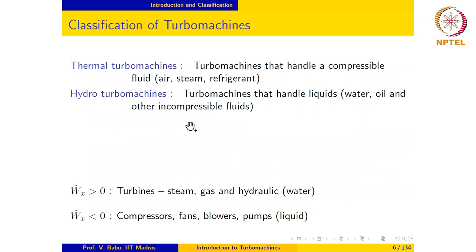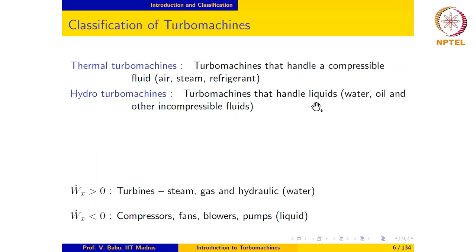Turbo machines may be classified in several different ways. The first classification is according to the type of fluid handled. If the machine handles a compressible fluid such as air, steam, or refrigerant, it is referred to as a thermal turbo machine because there is a change both in pressure and temperature of the fluid. If the turbo machine handles liquids such as water or oil, it is referred to as a hydro turbo machine — there is only a change in pressure. The term 'hydro' refers to water but is used in general to denote any turbo machine that handles liquid.